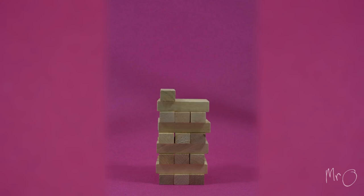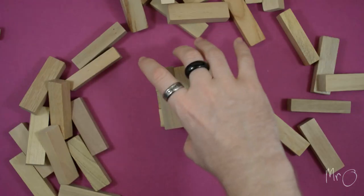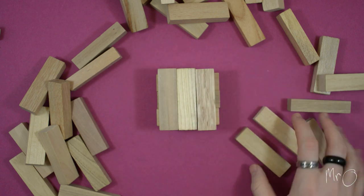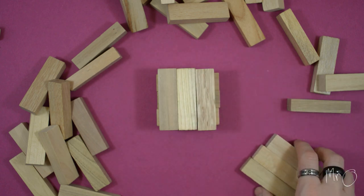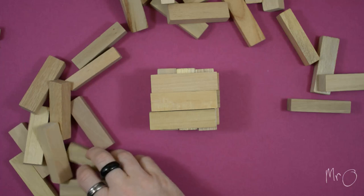Each Jenga tower is made of levels with three blocks in each level. The blocks are at right angles to each other, level by level.